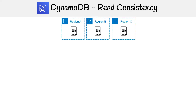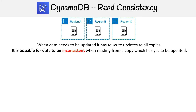DynamoDB replicates your database across three regions onto three separate hard drives, which allows for high availability so you don't have data loss. But this comes with a trade-off, because when you need to update your data, it's going to have to write updates to all those copies. And it's possible for data to be inconsistent when reading from a copy which has yet to be updated.